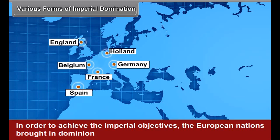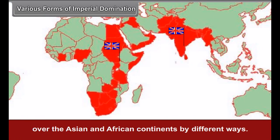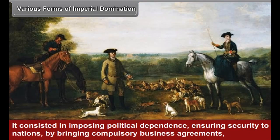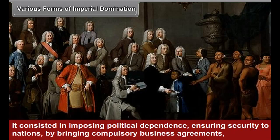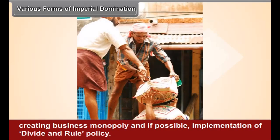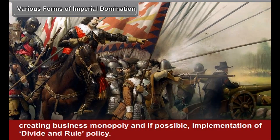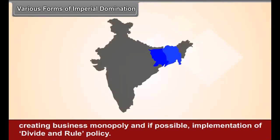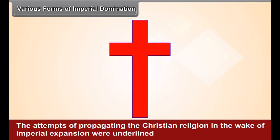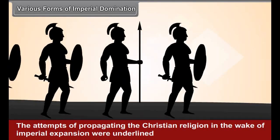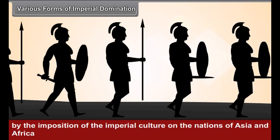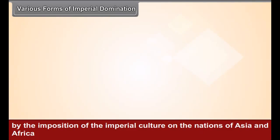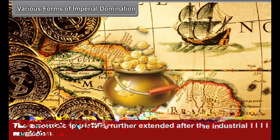Various forms of imperial domination: In order to achieve imperial objectives, the European nations brought dominion over the Asian and African continents by different ways. It consisted in imposing political dependence, ensuring security to nations, by bringing compulsory business agreements, creating business monopoly, and, if possible, implementation of a divide-and-rule policy. The attempts of propagating the Christian religion in the wake of imperial expansion were underlined by the imposition of imperial culture on the nations of Asia and Africa.